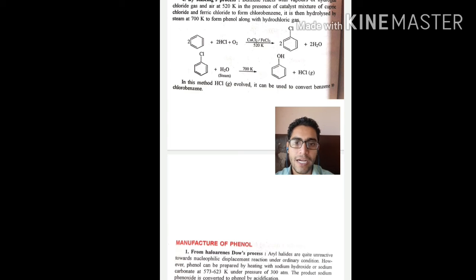Two molecules of benzene will react with two molecules of hydrochloric acid and oxygen gas in the presence of catalyst cupric chloride and ferric chloride at temperature 520 Kelvin, giving two molecules of chlorobenzene and two molecules of water. Chlorobenzene when hydrolyzed at a higher temperature, 700 Kelvin, gives phenol and hydrochloric gas. The hydrochloric gas formed is reused to convert benzene to chlorobenzene.